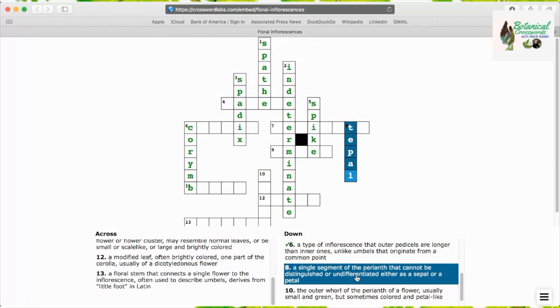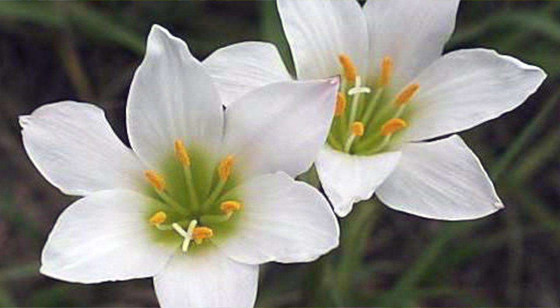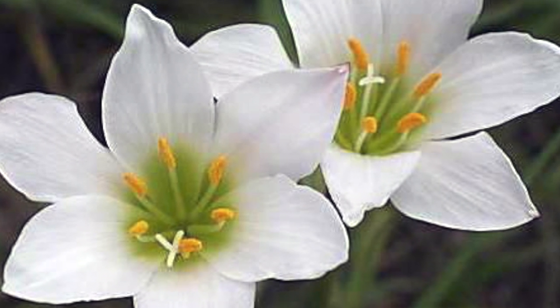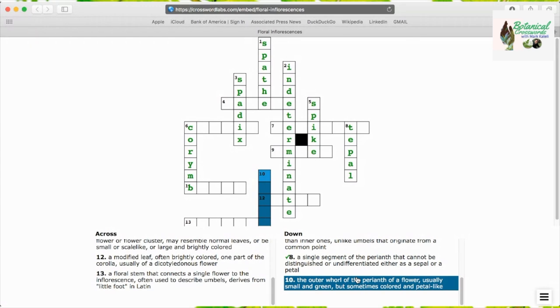Tepal is the next answer, a single segment of the perianth that cannot be distinguished or differentiated, such as our Florida native Zephyranthes.